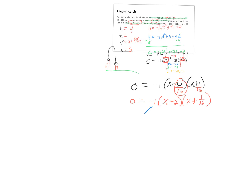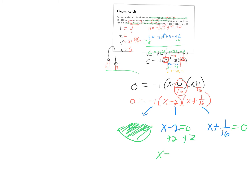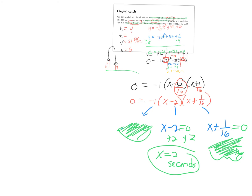Pulling pieces apart: negative 1 equals zero — discard. x minus 2 equals zero gives x equals 2 seconds — valid. x plus 1/16 equals zero gives x equals negative 1/16 — the ball didn't leave your hand 1/16 of a second before you threw it, so that doesn't make sense and we discard it. It takes about 2 seconds to catch the ball.